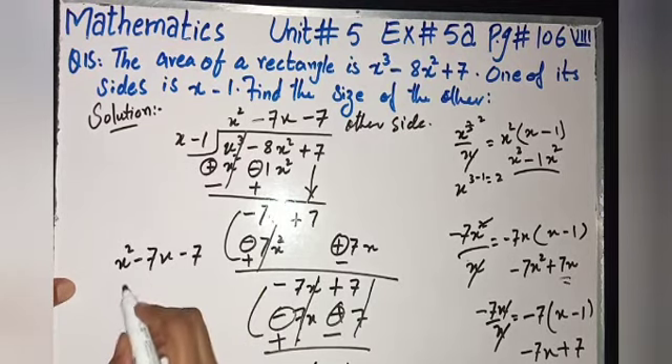x² - 7x - 7 would be the other side of rectangle. The area of a rectangle is x³ - 8x² + 7, one side is x - 1, and the other side is x² - 7x - 7.